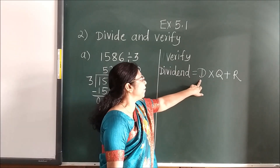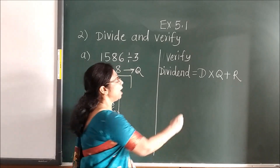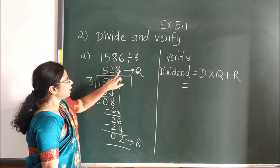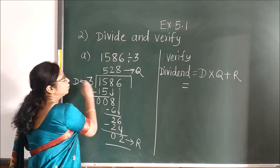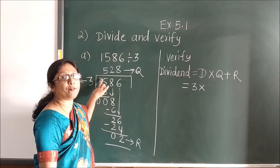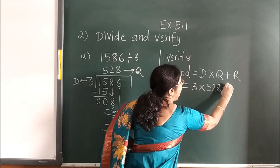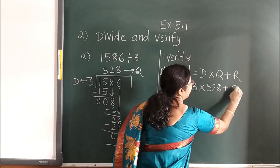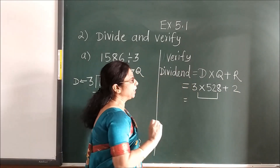D stands for divisor, Q for quotient, R for remainder. Now what is the divisor here? This is the quotient, this is the remainder — what is left is the divisor. So 3 multiplied by the quotient, which is 528, and the remainder is 2.